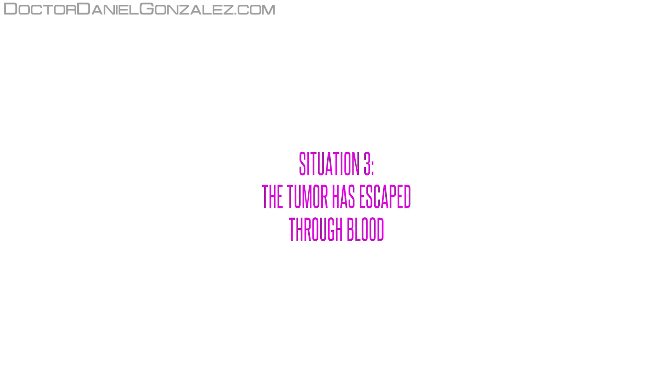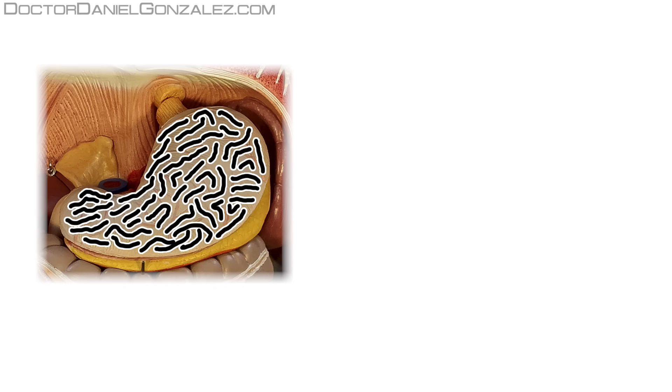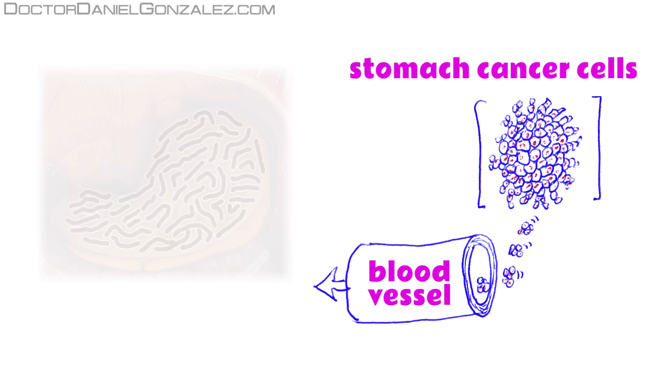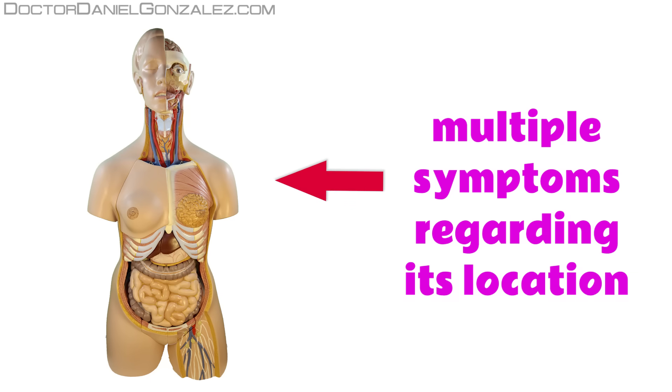Situation 3. The tumor has escaped through blood. The cells of stomach cancer can enter the bloodstream because, within the cancer itself, some cells penetrate a blood vessel after breaking its wall. Once in the blood, these stomach cancer cells can stay anywhere in the body, causing various symptoms depending on its location.